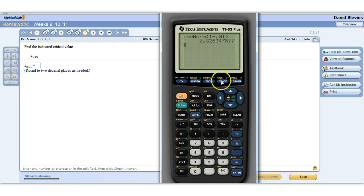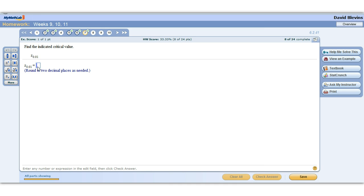1 minus 0.01. And it gives us a 2.326. It wants two decimal places this time, so 2.33. Another one that we see a lot in the z-distribution.